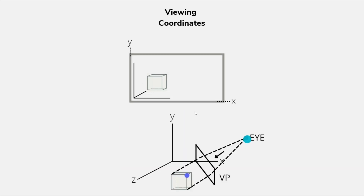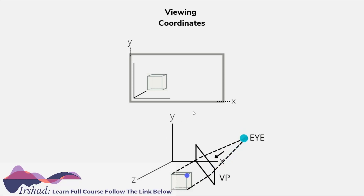Suppose we are observing the object from here — the image will be formed on the wall of the retina, or if a camera is placed here, the image will be formed on the film. But we can also place an external viewing plane, and the image can be formed on this viewing plane by drawing projection lines from the object. Here we take the z-axis getting away from us because things that are far appear smaller, and that's why we measure in that direction. So here we take the z-axis in the direction getting away from us, and it is a left-handed system.